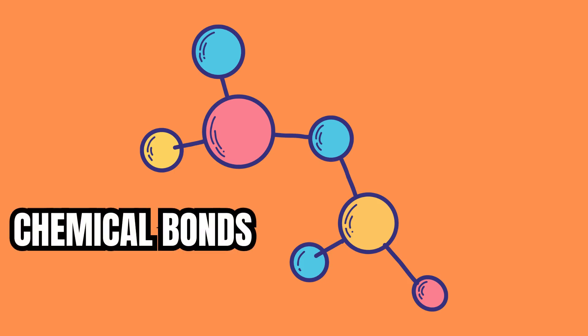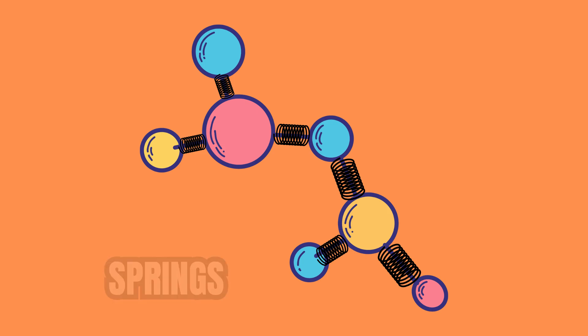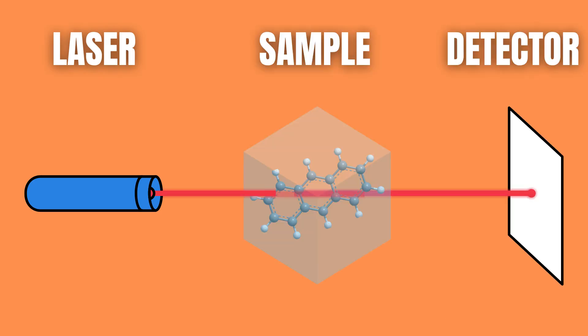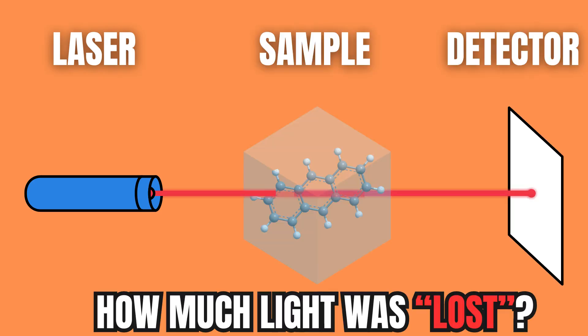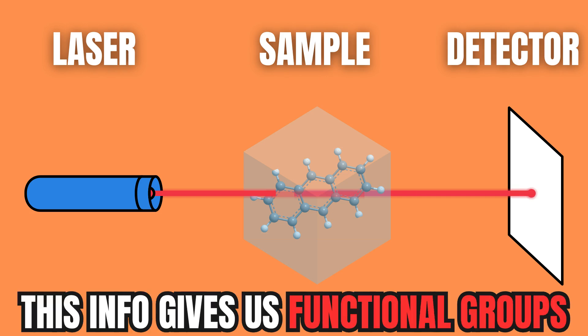The chemical bonds between the individual atoms in molecules can be thought of as springs. These springs can absorb the energy from light which will cause them to move. By measuring what light gets absorbed by the sample we can infer what functional groups make up the sample.